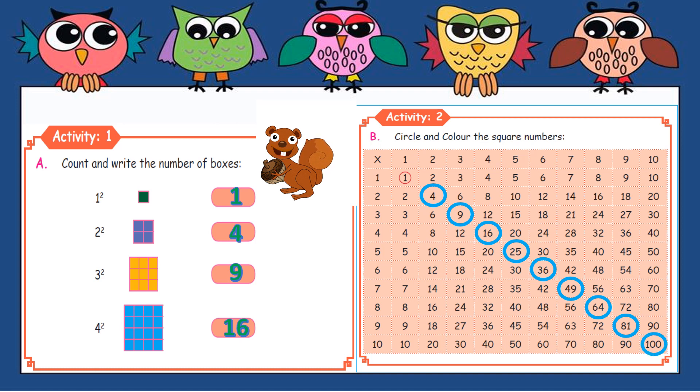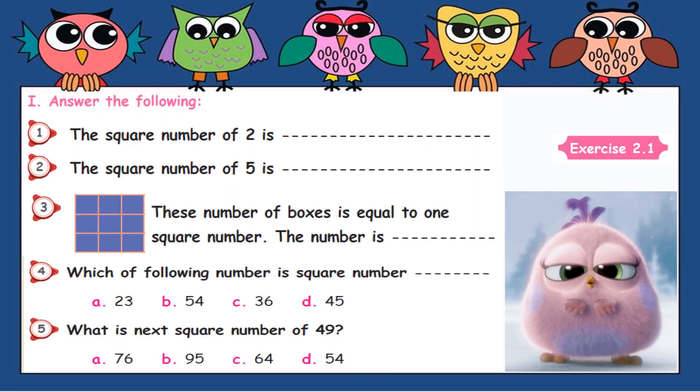Don't forget these square numbers. Okay? It will be repeated, so don't forget. Exercise 2.1. First, answer the following. The square number of two is, so two times two is four, isn't it? Then square number of five, you can answer. Good! Five times five is twenty-five.